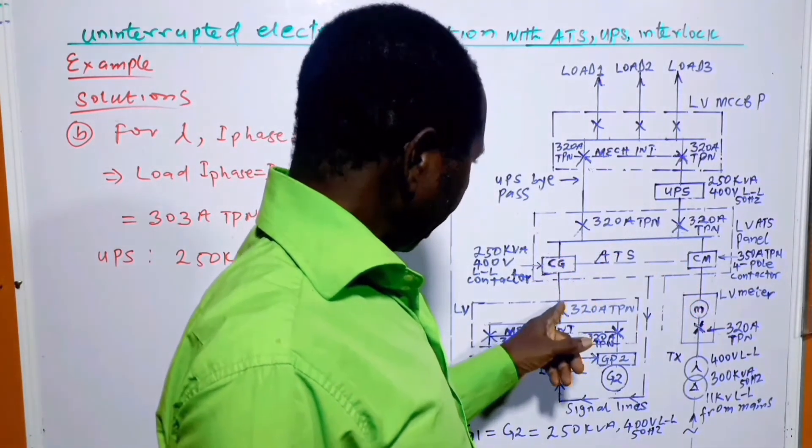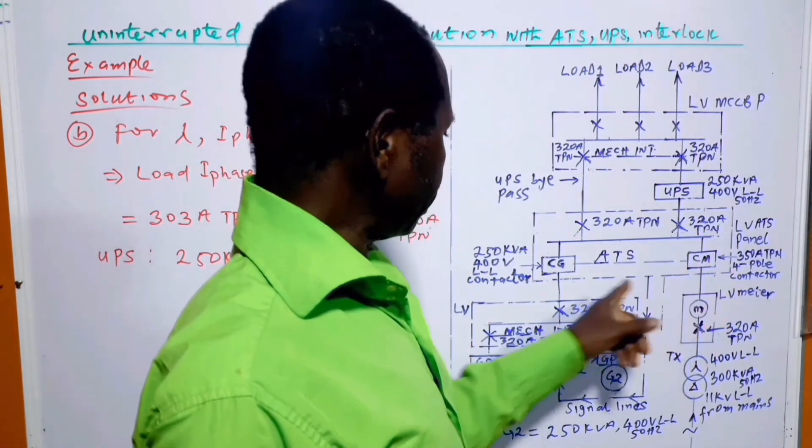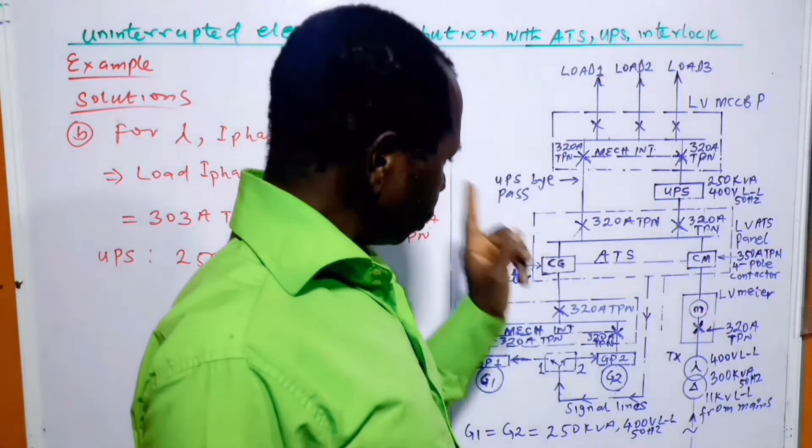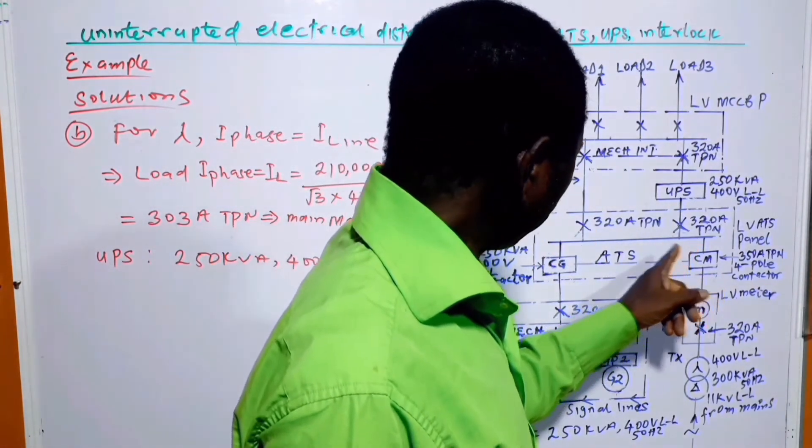It is this link that is called the ATS automatic transfer switch. When this contactor is energized, this one is de-energized. When this one is energized, this one is de-energized. The two of them cannot be energized at the same time.